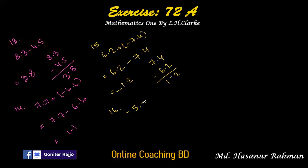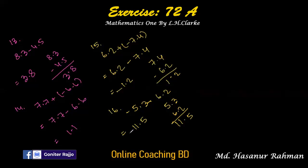Number sixteen: minus 5.3 minus 6.2. The sign of 5.3 and 6.2 are both the same, so we add: 5.3 plus 6.2 — 3 plus 2 is 5, 5 plus 6 is 11, so the answer is 11.5 with a negative symbol: minus 11.5.